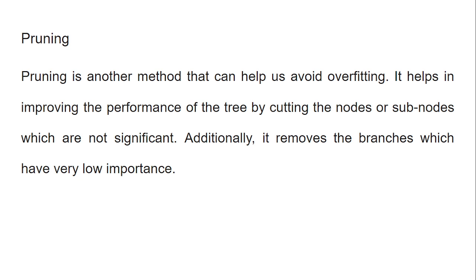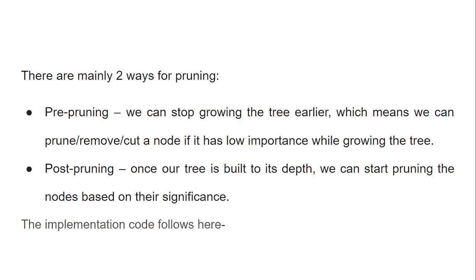Pruning is another method that helps avoid overfitting. It improves performance by cutting nodes or subnodes which are not significant, and removes branches which have very low importance. There are two types: pre-pruning, where we stop growing the tree earlier by removing low-importance nodes from the beginning; and post-pruning, where once the tree is built to its full depth, we start pruning nodes based on their significance.